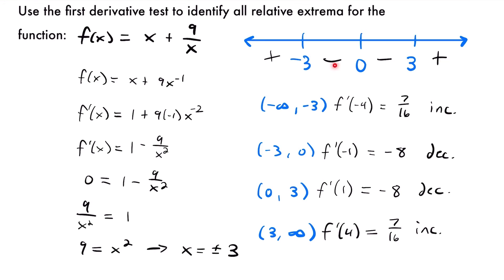Now let's analyze our number line. Our only critical values are negative 3 and positive 3. The point x equals 0 cannot be a relative extrema because it is a point of discontinuity, but we did need to include it and check values between it in case the sign changed. What we do see is that around our two critical values, the slope is changing signs. Our negative 3 is a relative maximum because it starts with an increasing interval — positive slope — and our positive 3 is a relative minimum because it starts with a decreasing interval — negative slope — then changes to positive.